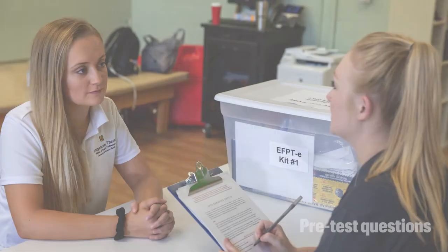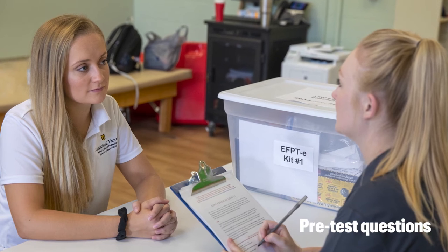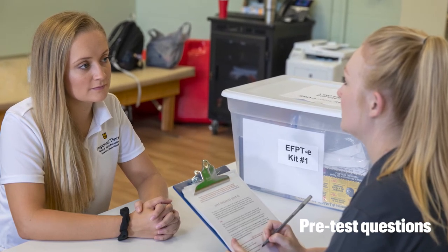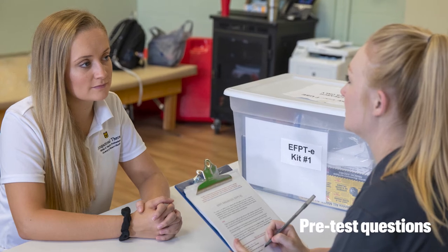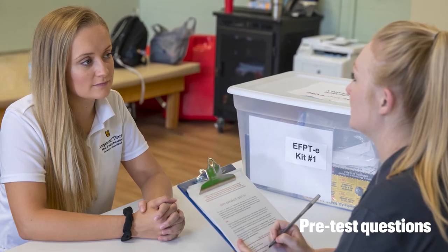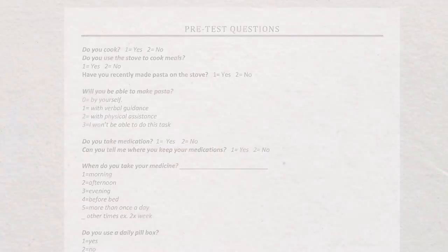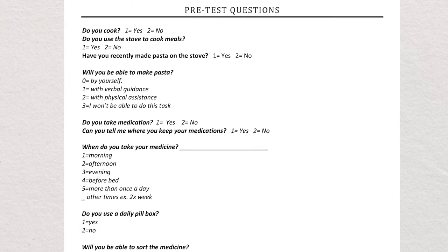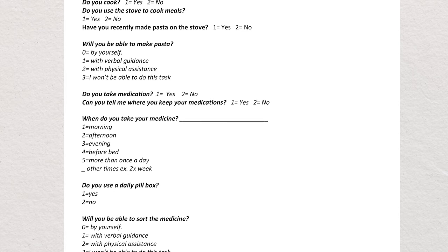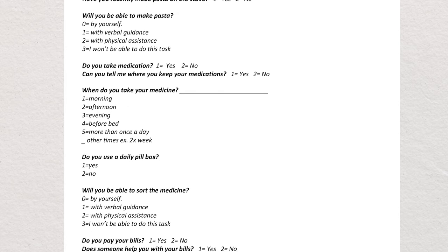Part of the EFPTE is a pretest to evaluate familiarity with the tasks and also to help assess an individual's awareness about their abilities prior to attempting the task. Following a brief description of the EFPTE tasks and rules, the client will be asked 14 questions concerning their experience and skill in performing activities directly related to the tasks they will be asked to complete.